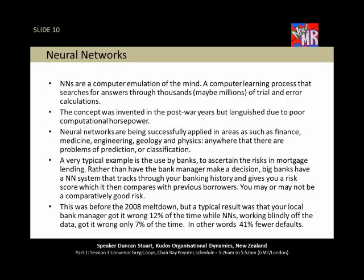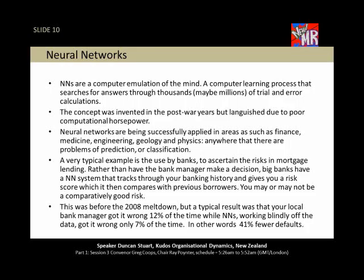A really typical example of neural networks in use is when you go to the bank and want to apply for a loan. Classically, the bank manager made the decision — he or she had been the branch manager for 27 years, knows your family, and says Ray, you're a good risk, so we'll lend the money. These days a neural network does it, partly because those managers move around every five minutes and don't know your family, and secondly they're actually proving less reliable than neural networks.